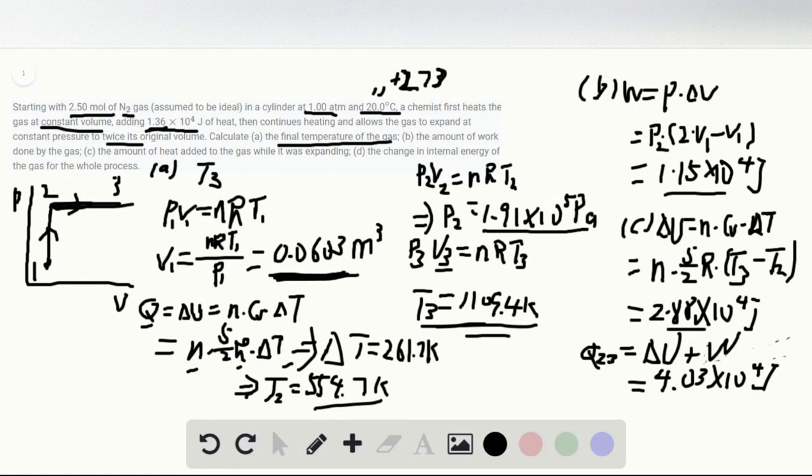In part D, we want to find the change in internal energy for the whole process. The total delta U equals delta U in process 1 to 2 plus delta U in process 2 to 3. Delta U for 1 to 2 is given in the problem as 1.36 times 10 to the fourth. Delta U for 2 to 3 is over here. Just plug in these two numbers, and you find the final result is 4.24 times 10 to the fourth joules. That's it.